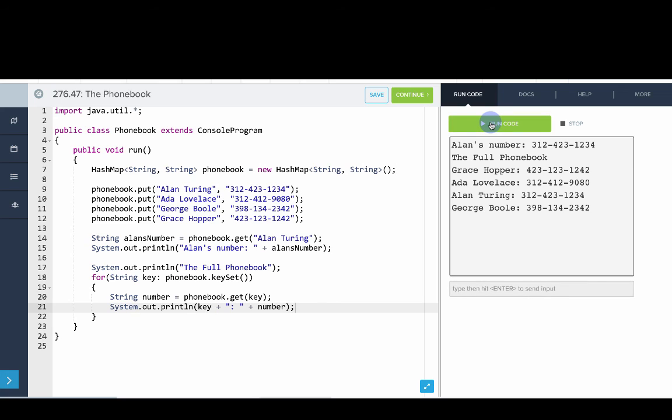So there you go. You can see that we have our full phonebook. So we'll run it again. And there you go. You can see what it does. So a map essentially is a way to store key value pairings. Key value pairings are really handy when you want to look something up, like you want to look up a number from a name in a phonebook, or you want to look up a word definition from a word in a dictionary.